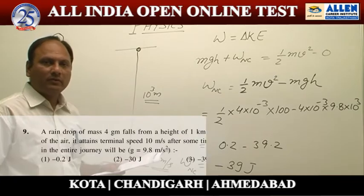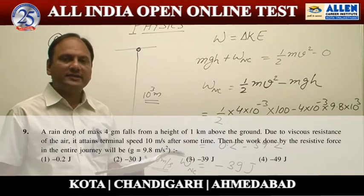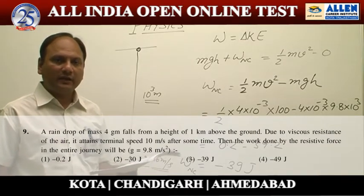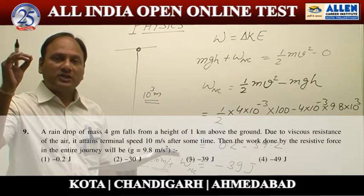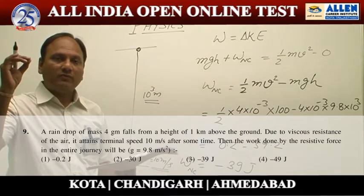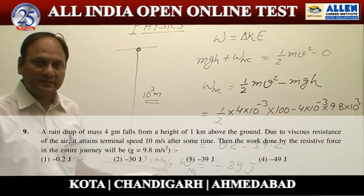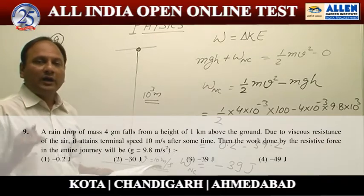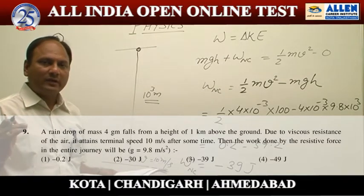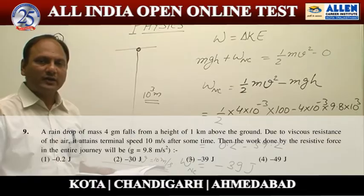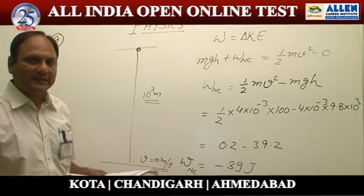Question number 9. A raindrop of mass 4 grams starts falling from a height of 1 kilometer from the surface. Due to viscous resistance, after some time it acquires a constant speed of 10 meters per second.